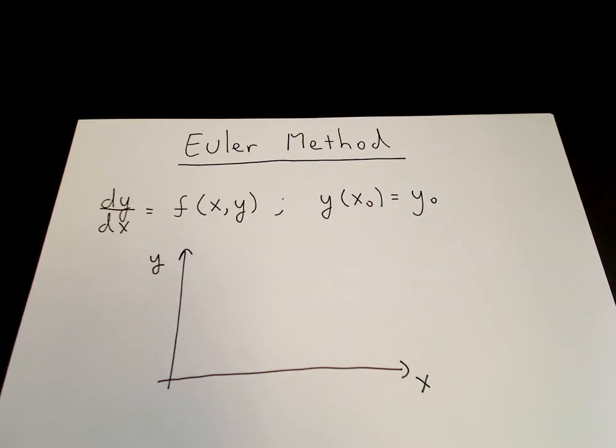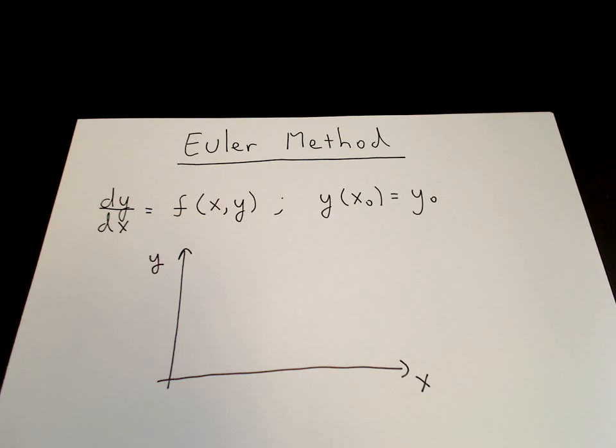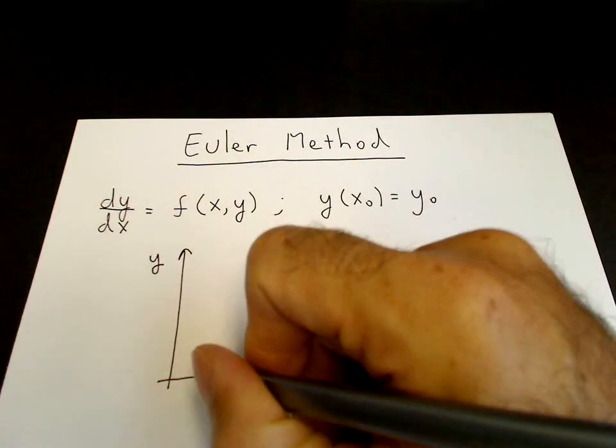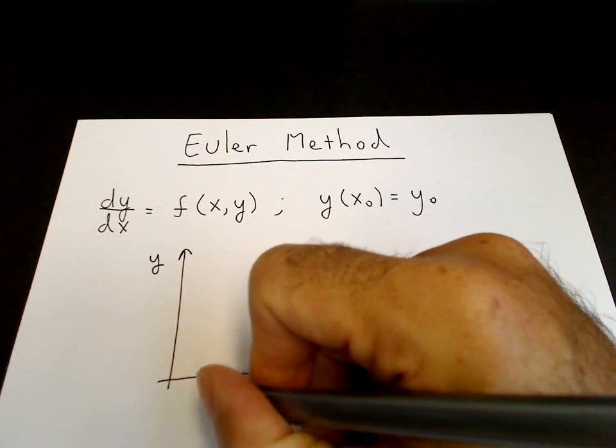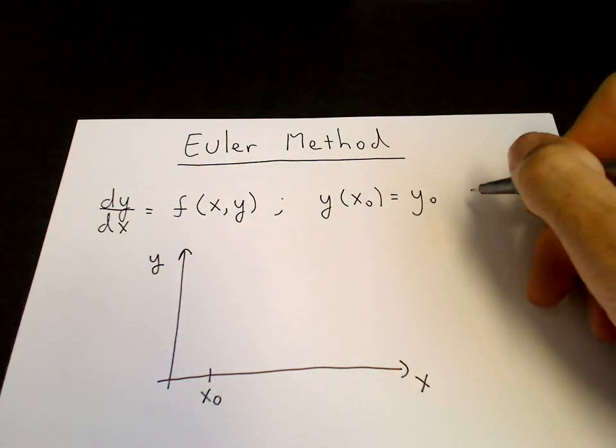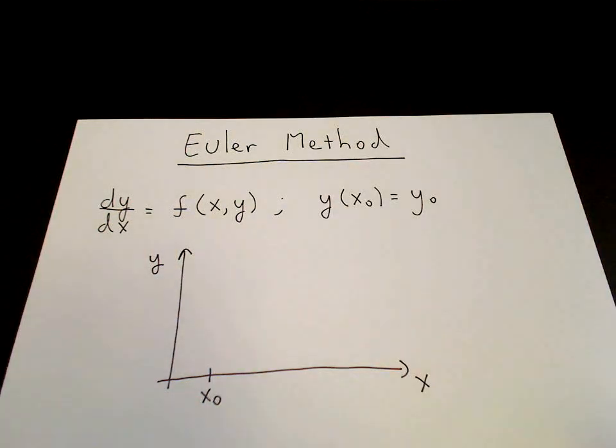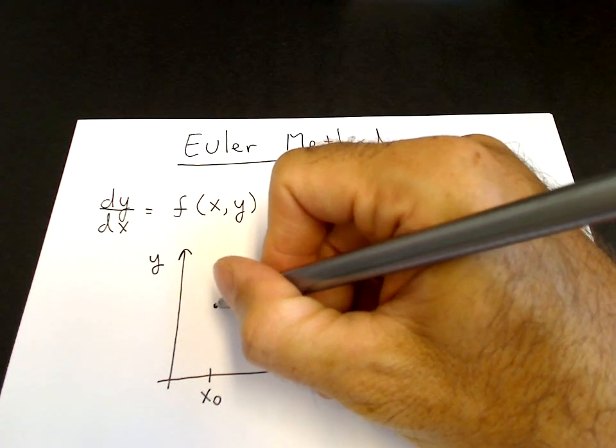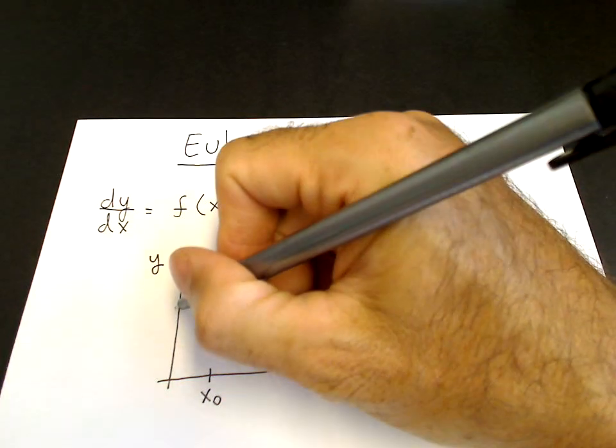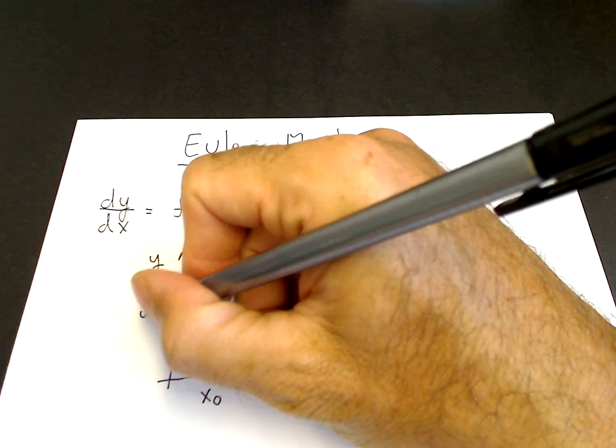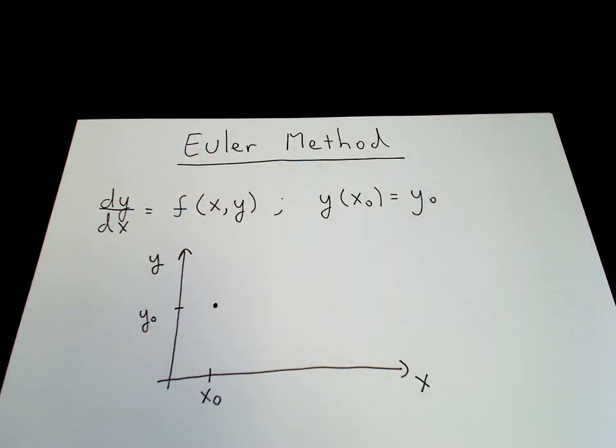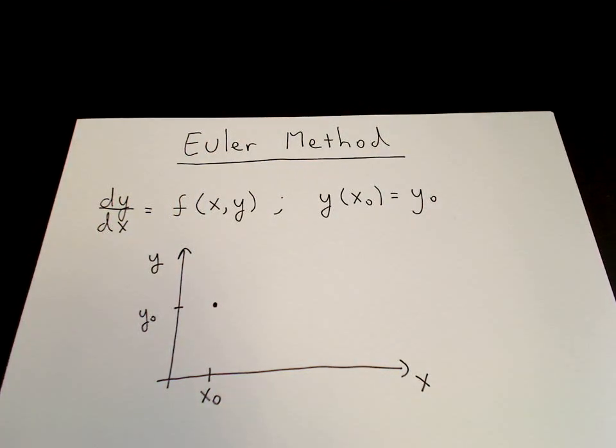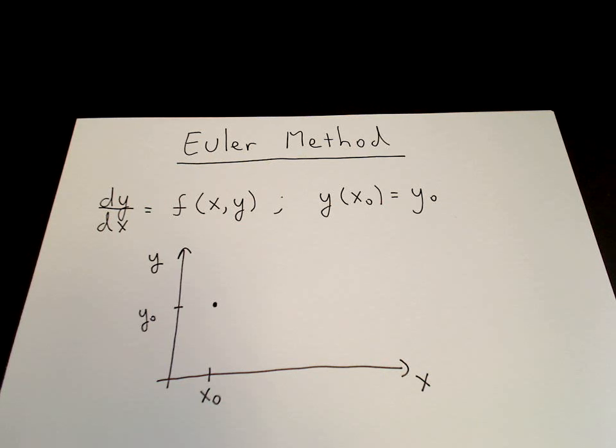So we have to start somewhere. That's the initial condition. So at the initial value of x₀, we know what the value of y is. Here we arbitrarily take x₀ positive and we arbitrarily take y₀ positive. But both numbers could just as easily be negative. That's the initial condition.